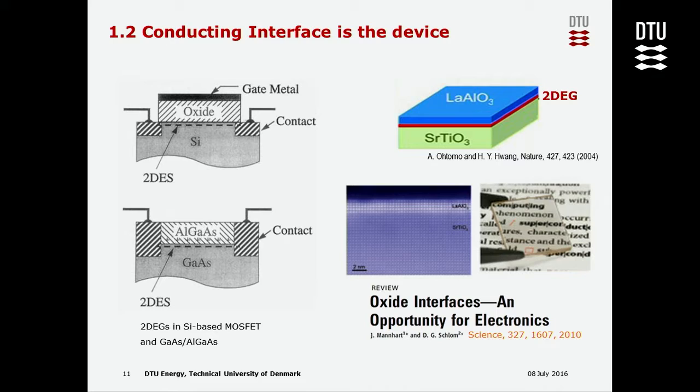This simple interface is used to build computers and smartphones. Surprisingly, it was also found in 2004 at an oxide interface. When Hwang and colleagues put lanthanum aluminate on strontium titanate, at the interface they found a metallic conducting layer. This was a big surprise to the community, because this material is also transparent, giving a new opportunity for electronics.